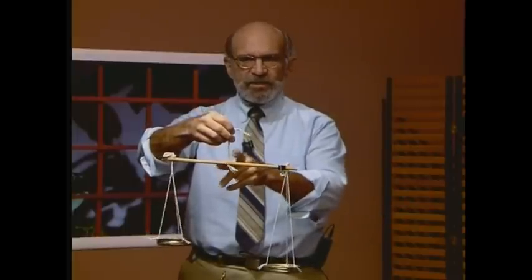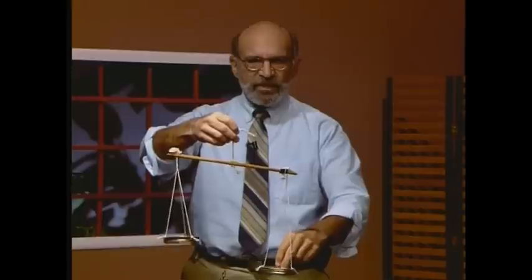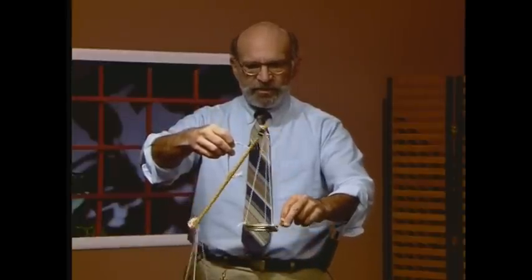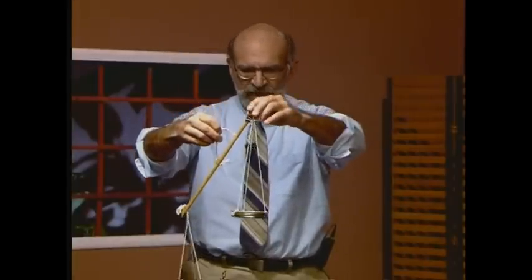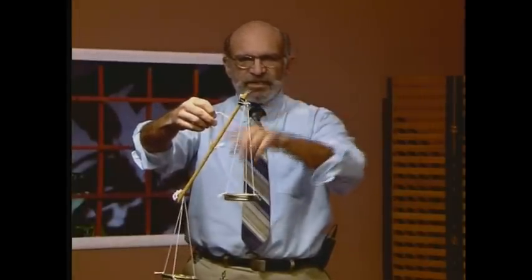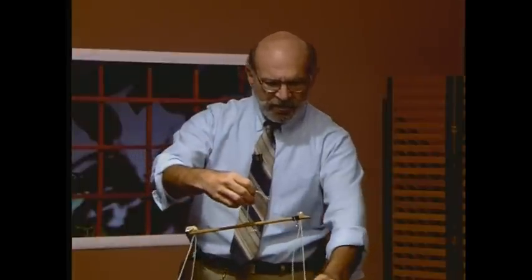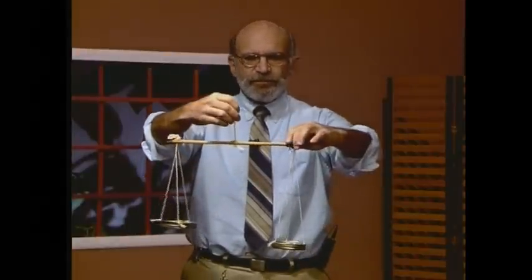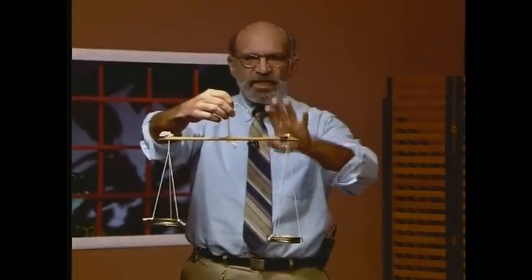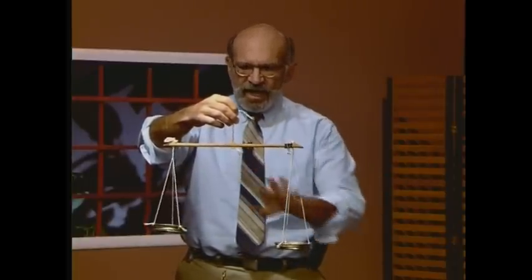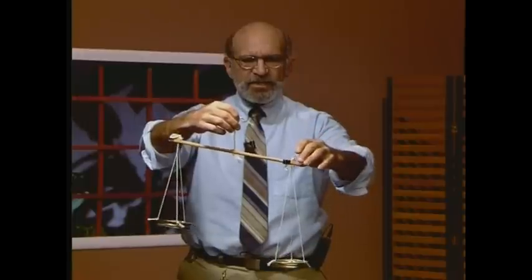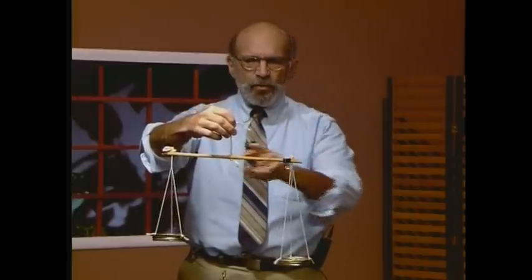If I have equal weights on both sides, I have an equality. Remove one, and I no longer have a balance — it's not an equality. When you see an equation, think of it as this kind of balance. Your statement is mathematically true when the balance holds — when there's an equal sign, both sides must be equivalent. The equal sign is like that pivot point on the balance.